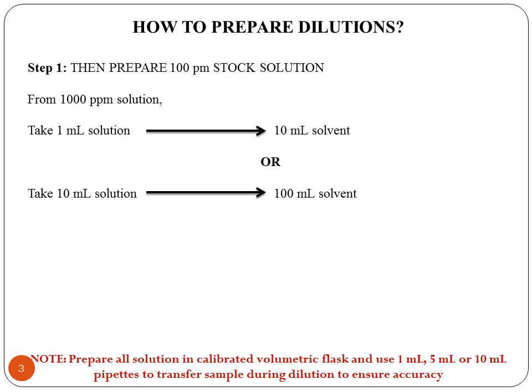The next step is to prepare a 100 ppm stock solution from the 1000 ppm solution prepared previously. These steps are done to keep the accuracy of dilutions and to get good confirmation of linearity after plotting the Calibration Curve. From the 1000 ppm solution, take 1 ml and dilute to 10 ml of solvent, or take 10 ml and dilute to 100 ml of solvent. This gives you 100 ppm stock solution. All solutions must be prepared in calibrated volumetric flasks, using 1 ml, 5 ml, or 10 ml pipettes to ensure accuracy of dilutions.